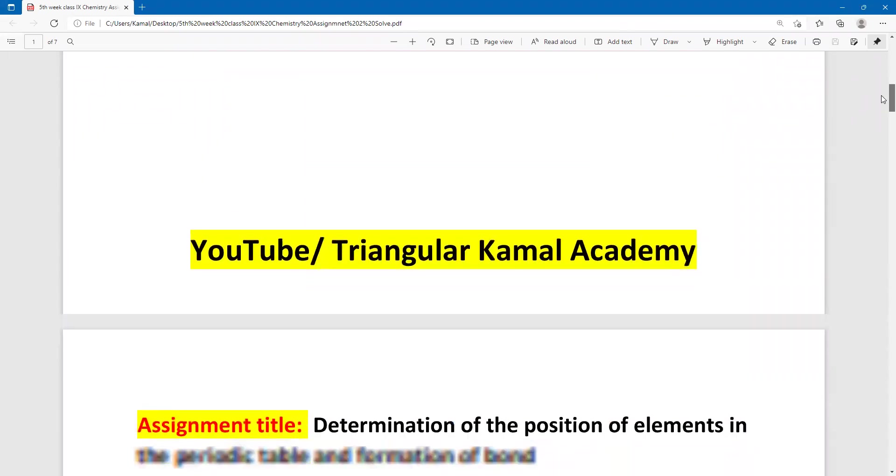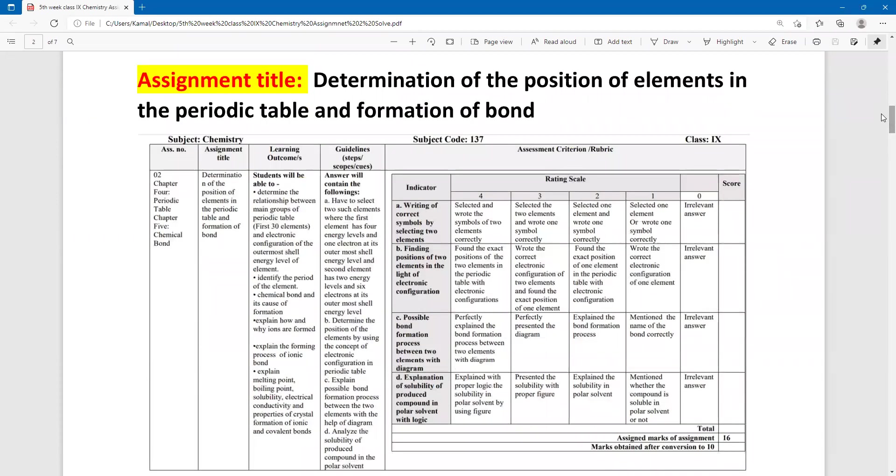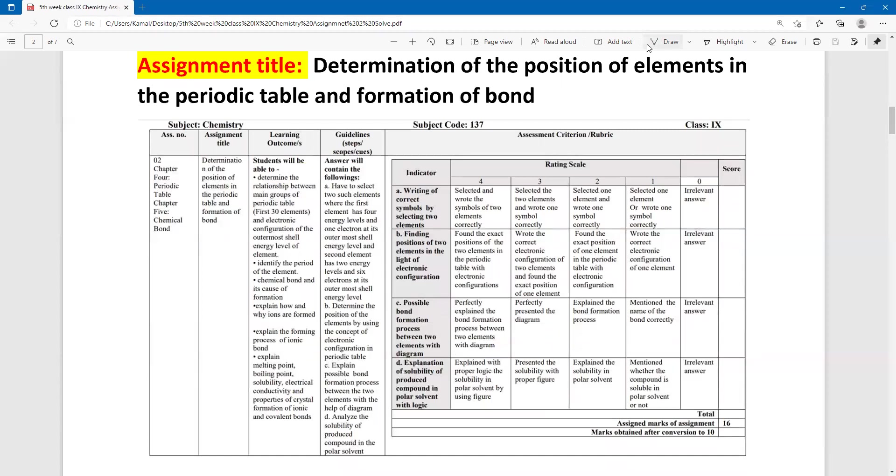Dear students, let's see the assignment title and question. Determinations of the position of elements in the periodic table and the formations of bond. This assignment from chapter four, periodic table and chapter five, chemical bond.